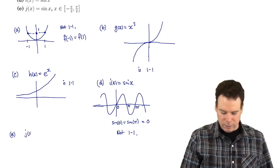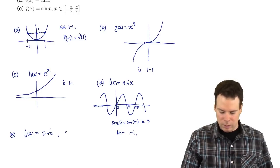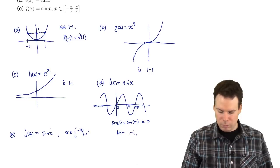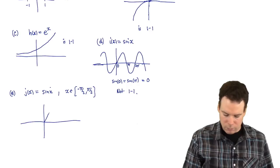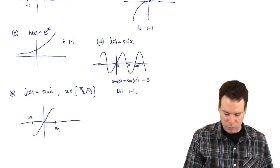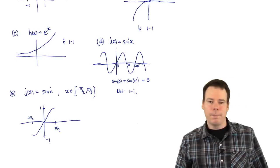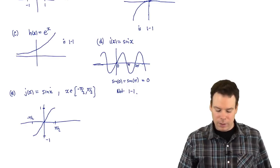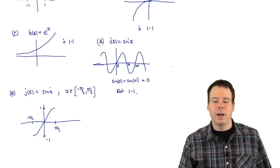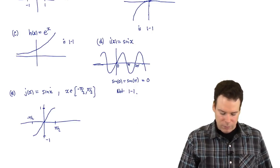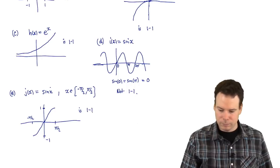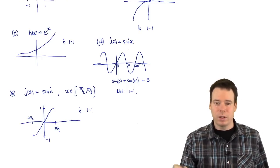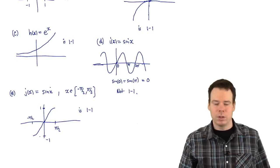What about the sine function again, but now restricting the domain to [−π/2, π/2]? In this case the function looks like this — from −π/2 to π/2 — and the range goes from −1 to 1. Is that function one-to-one? Now it is, because we've eliminated all the possible repeating values. It only takes values between −1 and 1, taking each one exactly once over the interval from −π/2 to π/2. So the restricted sine function is one-to-one on its domain.